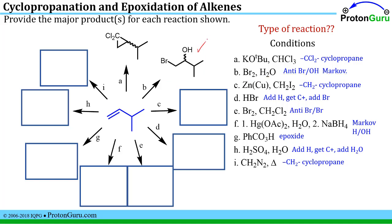Reaction condition C is the Simmons-Smith reaction, one of the ways to make cyclopropane rings by adding a CH2. This is just like what we did on the previous page. There will be no chirality because once you add the CH2 substituent, this side of the ring and that side of the ring will be the same. So you have an achiral material.